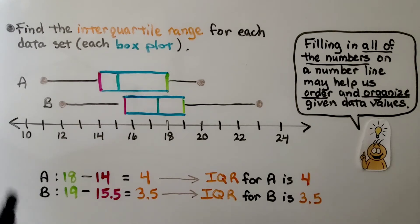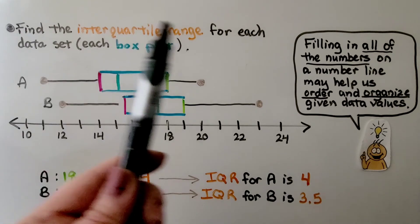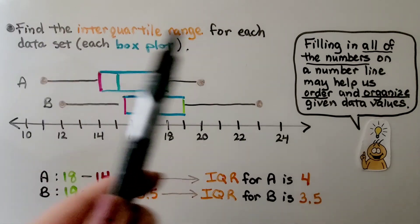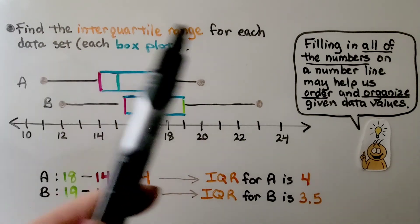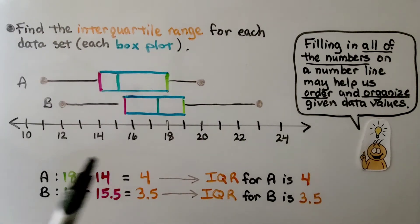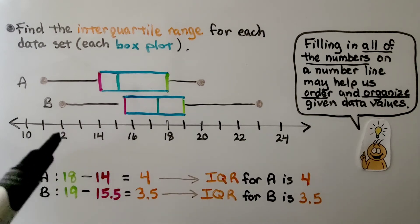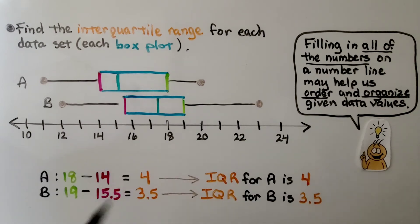When you're given data values in a data set and need to put them in order and make your number line, filling in all of the numbers on the number line may help you order and organize given data values.